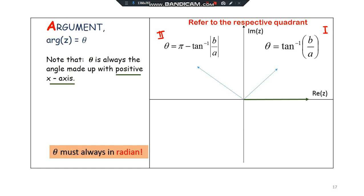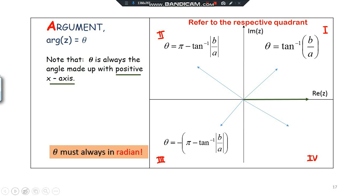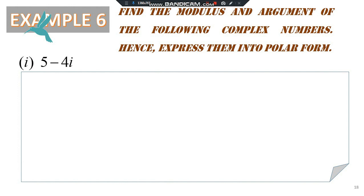Quick recap: if theta is in the first quadrant, the formula is arctan(b/a). In the second quadrant it's pi minus arctan(b/a). In the third quadrant the difference is just the negative sign in front: negative (pi minus arctan(b/a)). In the fourth quadrant, the formula is simply negative arctan(b/a).